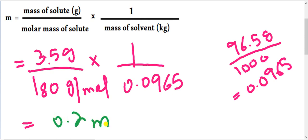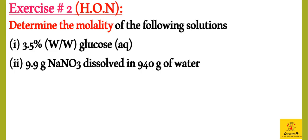This is a high order numerical because students need to extract information from weight by weight percent before applying the formula. The next part is 9.9 grams sodium nitrate dissolved in 940 grams of water. Finding the molality: mass of solute 9.9 grams, molar mass of sodium nitrate is 85 grams per mole, water is 940 grams (0.940 kg). The answer is 0.124 molal.